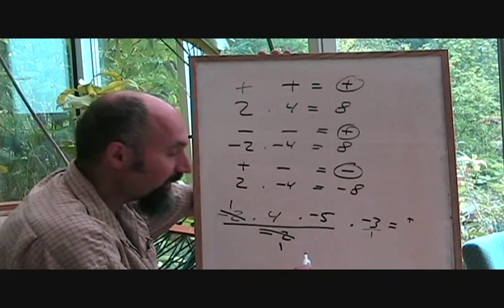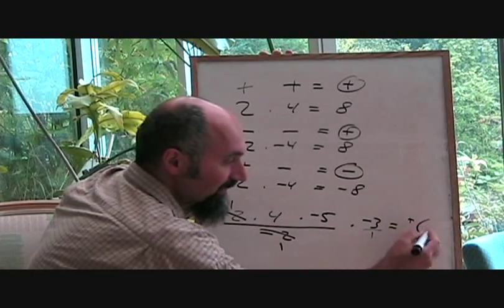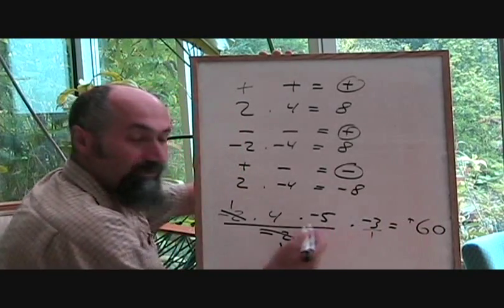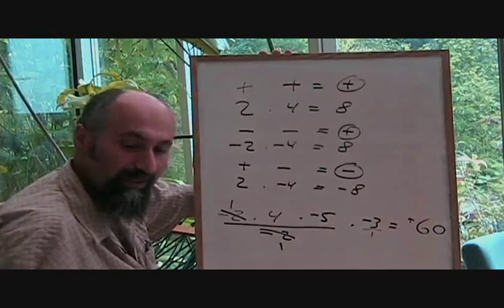4 times 5 is going to be 20. 20 times 3 is going to be 60. And it was an even number of negatives. So we know it's going to be a positive 60. Simple as that.